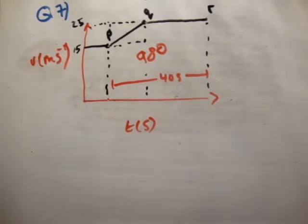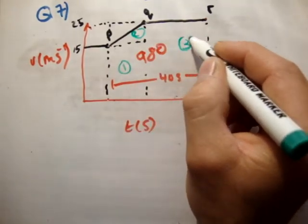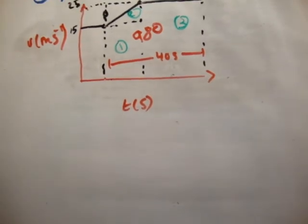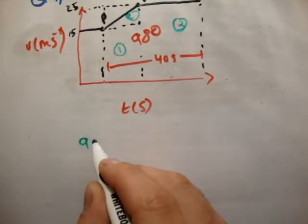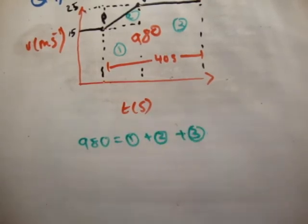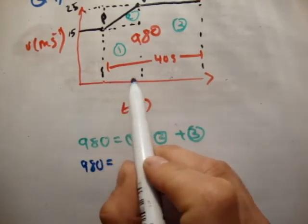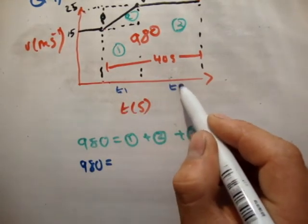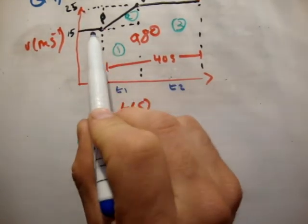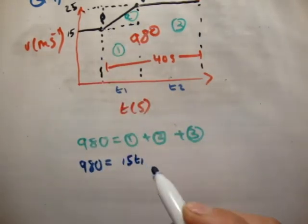So what do we do? Well, we'll say that we have three regions. We'll say 1, 2, and 3. And we'll know that the total distance is 980. It's equal to 1 plus 2 plus 3. But we know that each of those shapes is quite regular. So for example, 980 is equal to, we'll call this area here T1, this area here T2. So the area of this rectangle is the base by the height. So that's 15T1. That's equal to area 1.